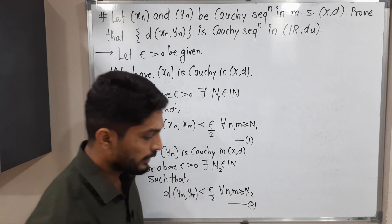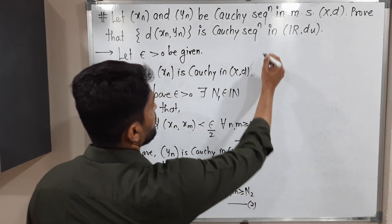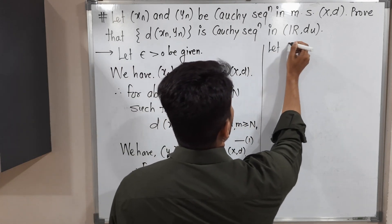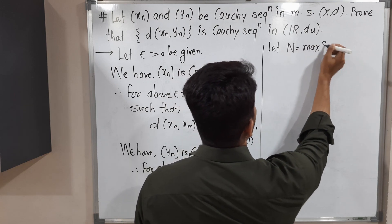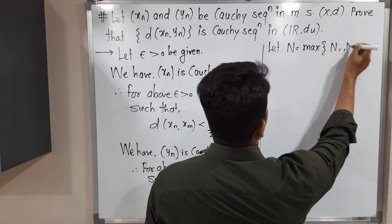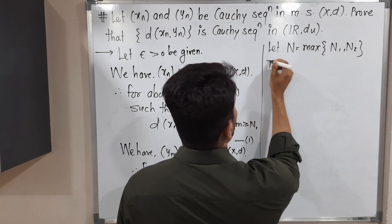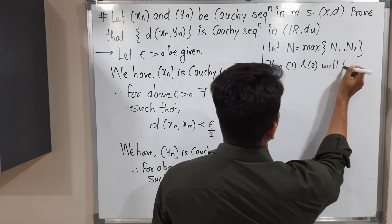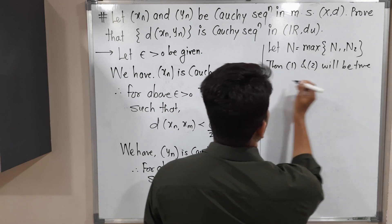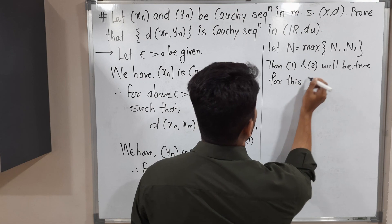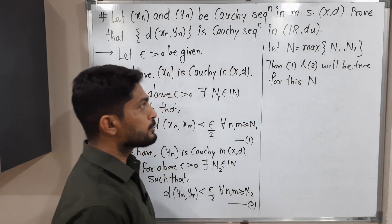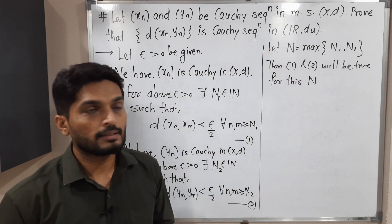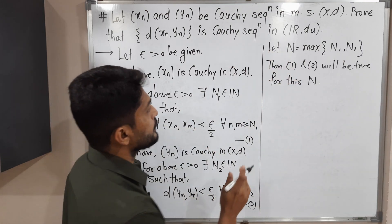To have both inequalities hold simultaneously, we choose N = max(N1, N2). Then both (1) and (2) are true for this capital N, so we can use both inequalities anywhere for n, m ≥ N.